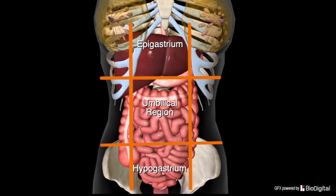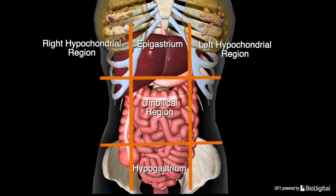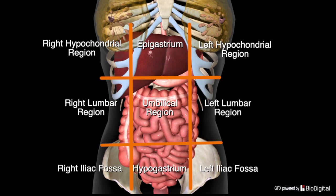On either side, the three regions from top to bottom are the hypochondrium — thus you have right and left hypochondrial regions — the lumbar region, giving right and left lumbar regions, and finally the right and left iliac fossae, or iliac regions. So there you have it: nine regions that the abdominal cavity can be divided into.